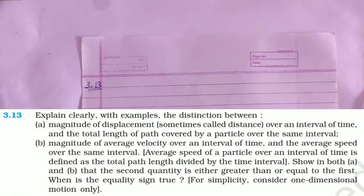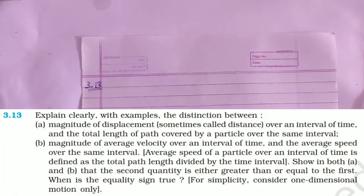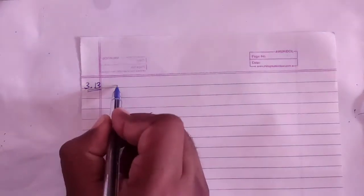NCRT solution Chapter 3, Motion in a Straight Line, Question 13. Explain clearly with example the distinction between: first, magnitude of displacement (sometimes called distance) over an interval of time and the total length of path covered by a particle over the same interval; second, magnitude of average velocity over an interval and average speed over the same interval. Show in both parts (a) and (b) that the second quantity is either greater than or equal to the first. Consider one-dimensional motion only.